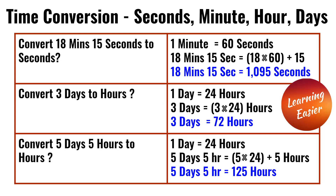Convert five days and five hours to hours. One day is equal to 24 hours. So five times 24 is 120. 120 plus five is 125. So five days and five hours is equal to 125 hours.